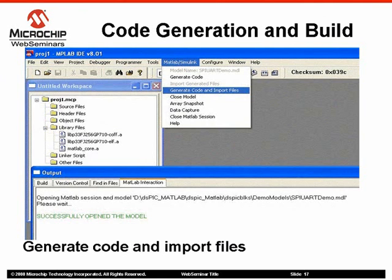This shows how to generate and import files from a Simulink model once you have configured Real-Time Workshop settings and saved the model. It is mandatory to have a project in MPLAB IDE before generating code. Generate Code generates code from the specified model. Import Generated Files imports all generated files into the active project. All other dependent files are compiled, and object files are archived and imported as the MATLAB core.a library. By clicking Generate Code and Import Files, both operations are done in a single step. Add library files libp33fj-coff.a and libp33fj-elf.a to the project and build.